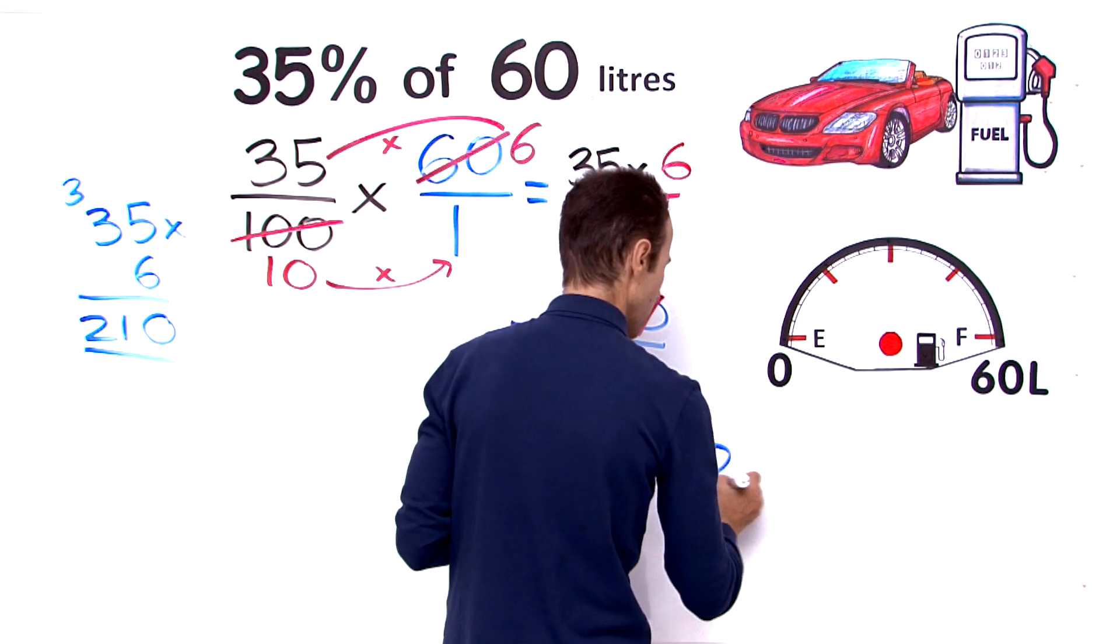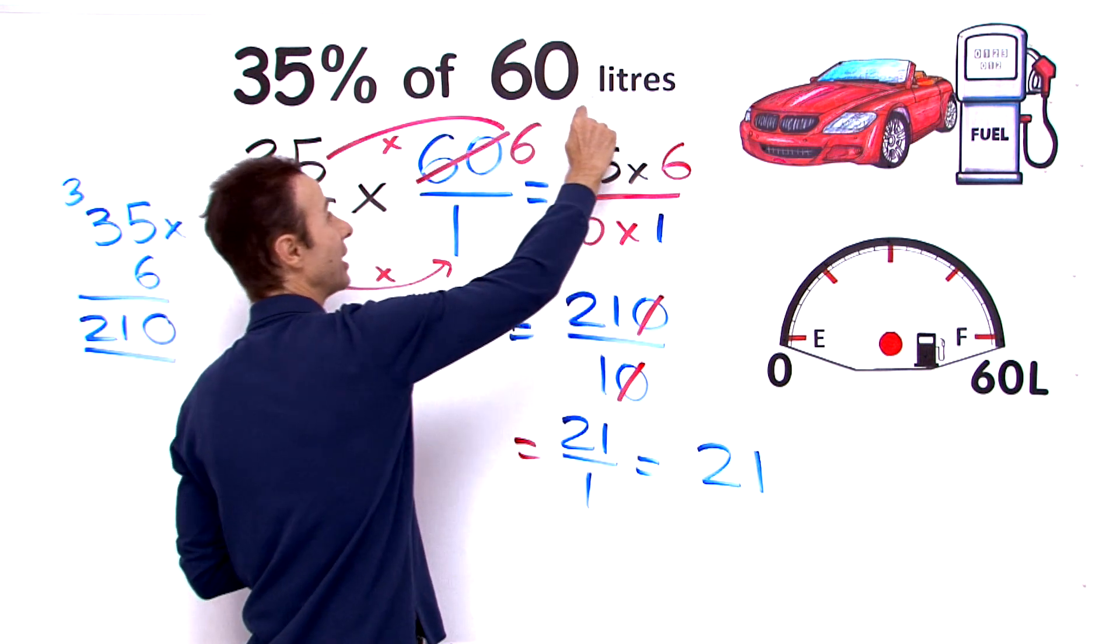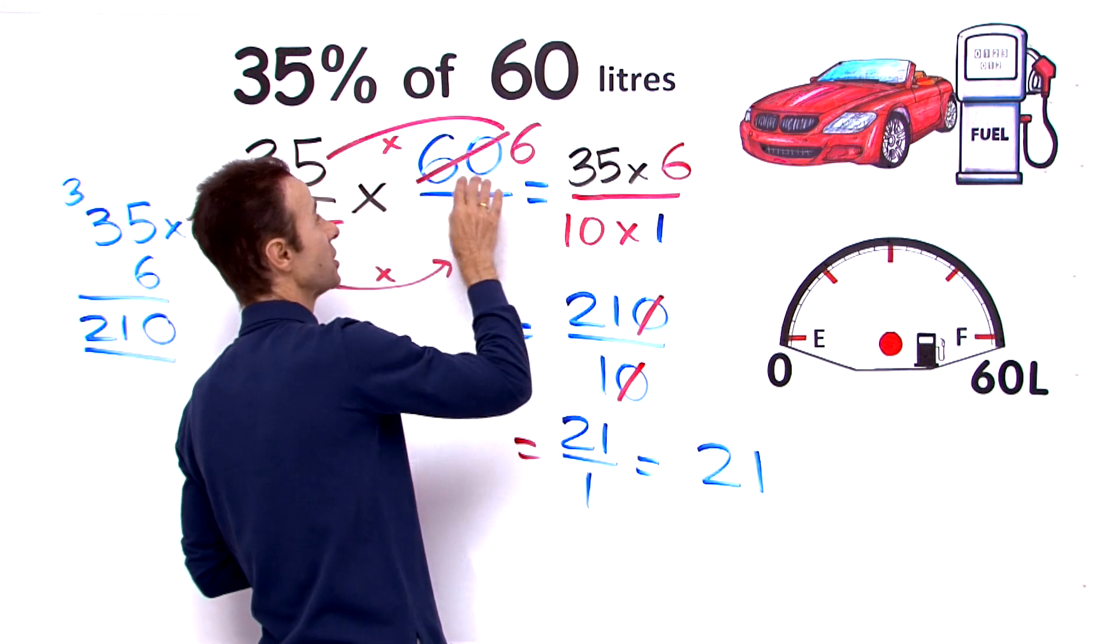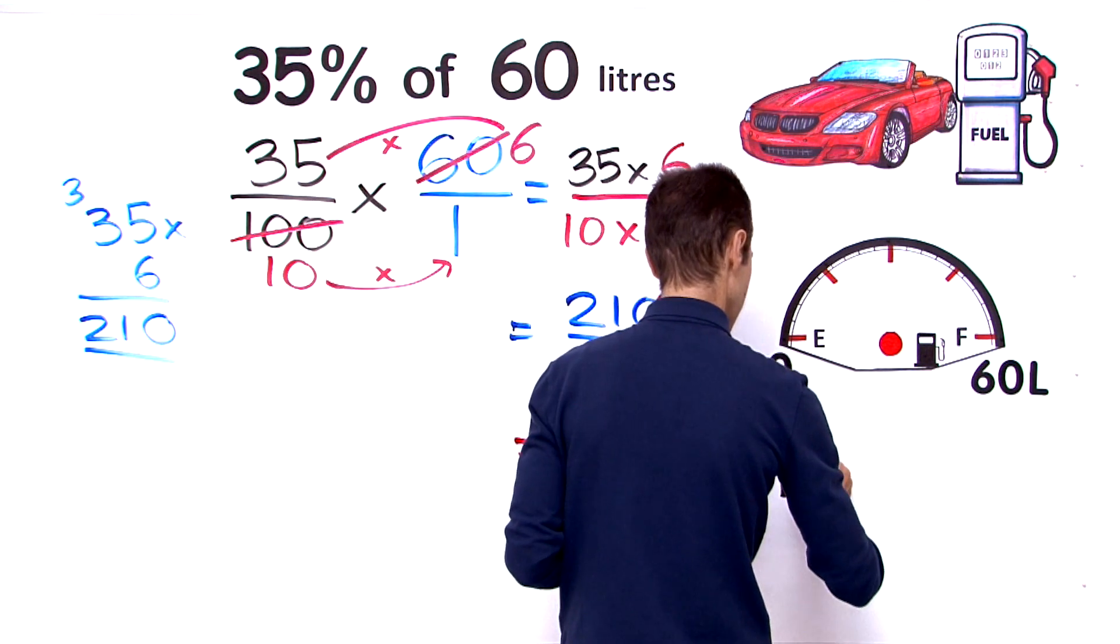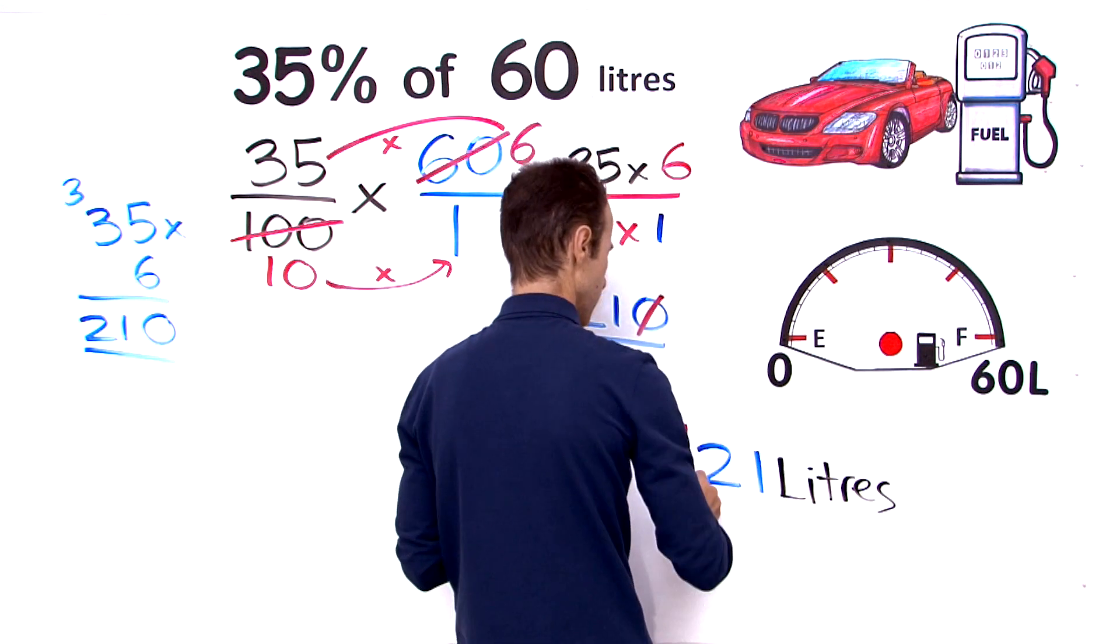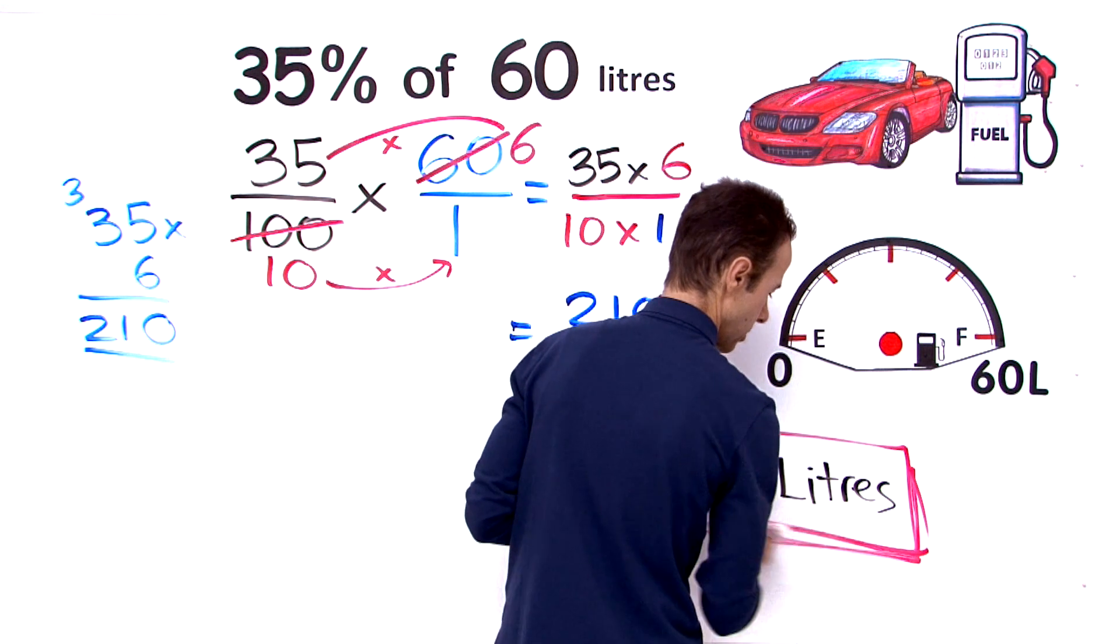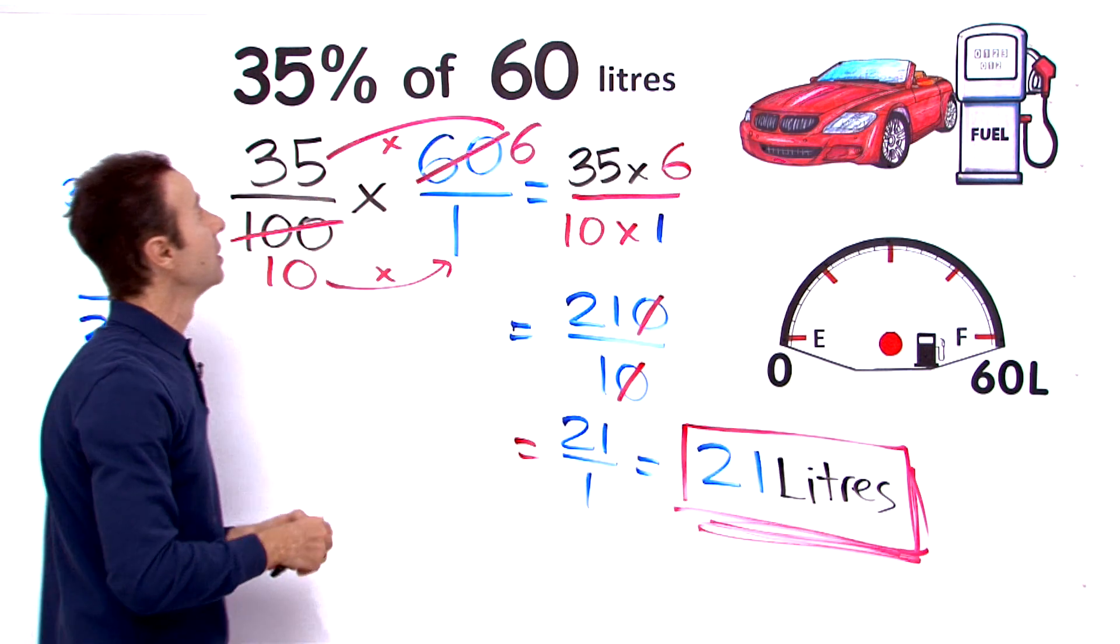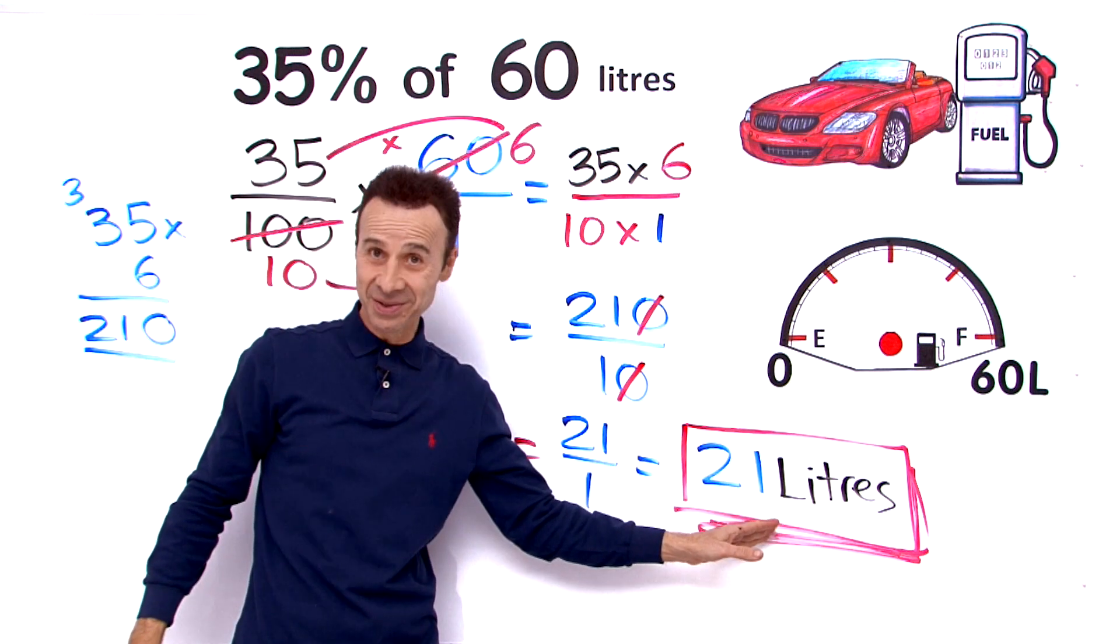21 what? Well, we are working with 60 litres, and we want 35% of 60 litres. Therefore, the answer is going to be 21 litres. So again, 35% of 60 litres is 21 litres.